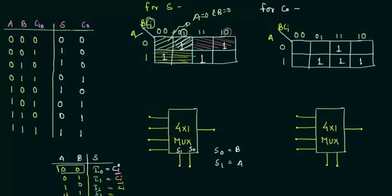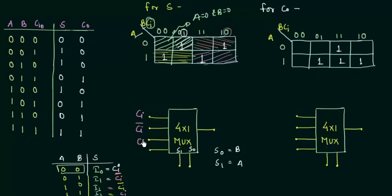For the last case when A=1 and B=1, it covers the last two cells. The 1 is present, and the value of Cin for that cell is 1. So I3 = Cin. To summarize the Sum implementation: I0 = Cin, I1 = Cin complement, I2 = Cin complement, I3 = Cin. The selector variables are B (S0) and A (S1).